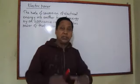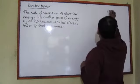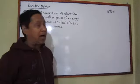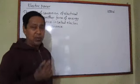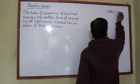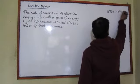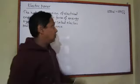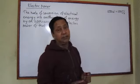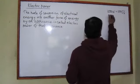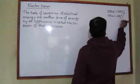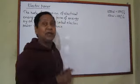What is the meaning? The meaning is very simple. If someone says the power of an electric heater is 1000 watt — power is measured in watt according to the SI system — it means 1000 joule per second. It means in every one second, this heater converts 1000 joule of electrical energy into heat energy. In the same way, if someone says the power of this bulb is 100 watt, it means it converts 100 joule of electrical energy into light and heat energy in every one second.